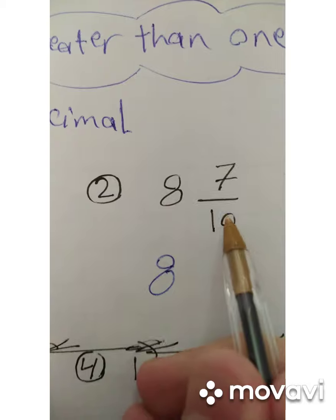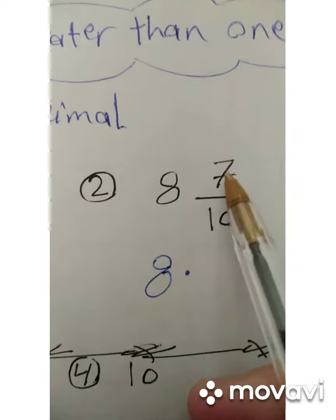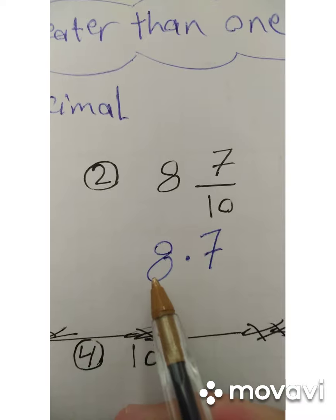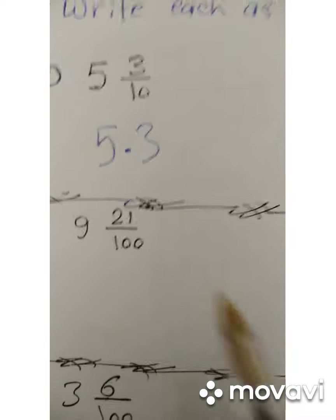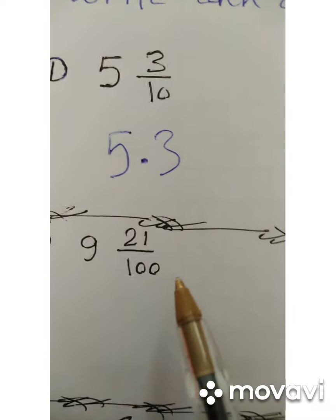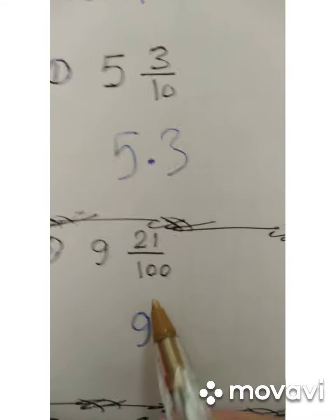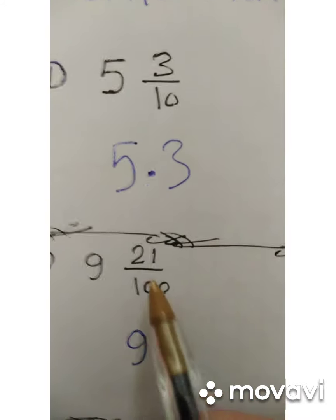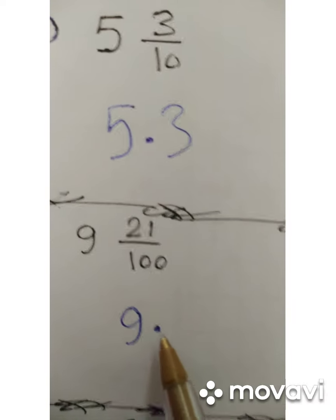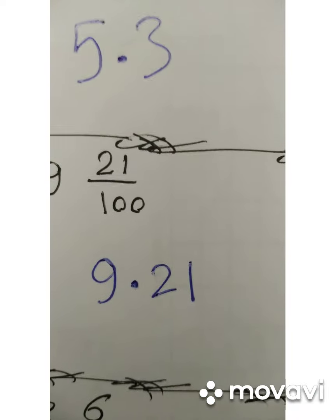Seven tenths has just one digit after the decimal point, so write seven. We read it as eight and seven tenths. Number three: nine and 21 hundredths. The whole number is nine — write nine, then put the decimal point. We have 21 hundredths, which is two digits after the decimal, so write 21. We read it as nine and twenty-one hundredths.